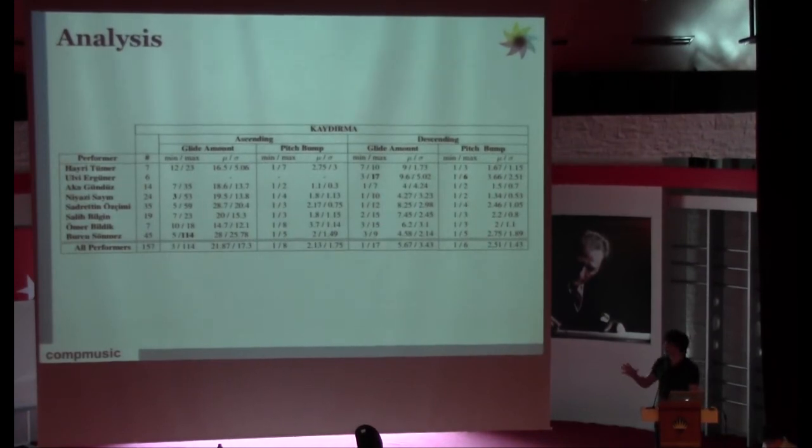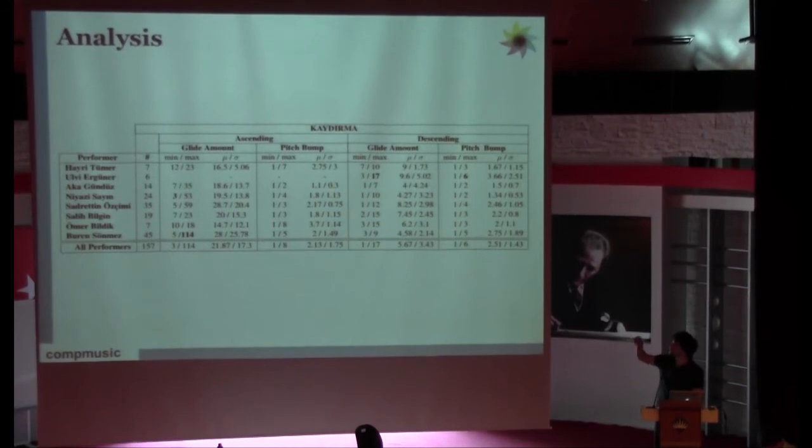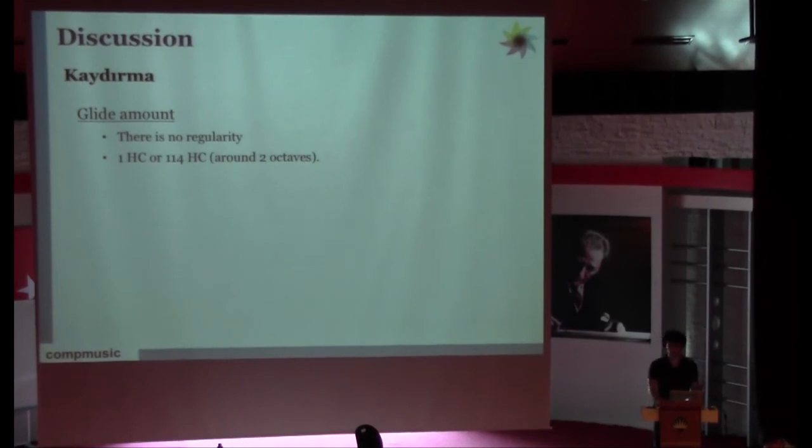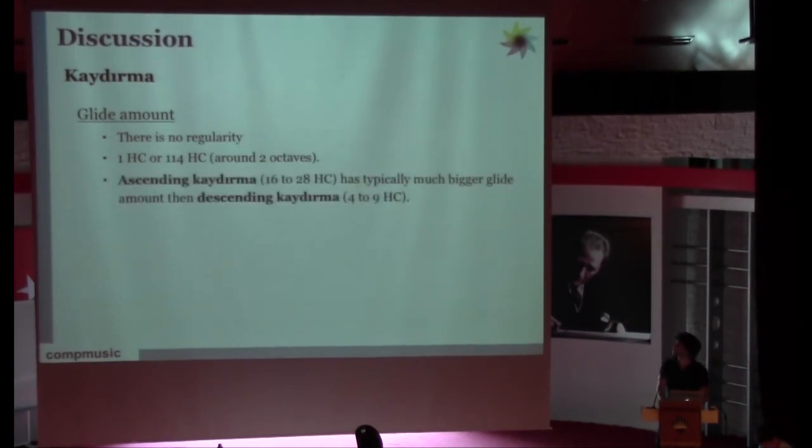For kaydirma, it has less regularity than the vibrato. Especially for ascending and descending, the glide amount changes a lot. We can say there is no regularity. It can be one holder comma or 114 holder comma, which is equivalent to two octaves. They can go up to two octaves. But one kind of regularity we can say: for ascending, the amount they go up is always higher than the amount compared to the descending one.